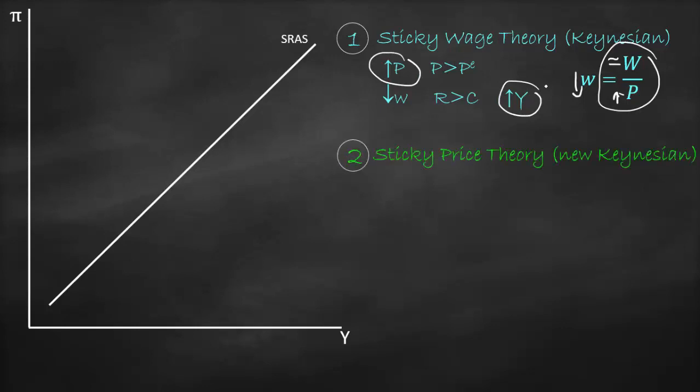The second theory is called the sticky price theory, and this is a new Keynesian theory. Assume we have a restaurant and we print a menu — it's not logical to reprint it every day or week, so we update it about every year. If prices increase, I cannot reprint new menus, so I cannot charge higher prices; I must charge the prices in the menu. Therefore, my relative price will be lower, meaning more customers will come, demand will be higher, and I need to increase output to meet that extra demand. Higher prices are thus accompanied by higher output — a positive relationship between price and output — so the short-run aggregate supply curve is upward sloping.